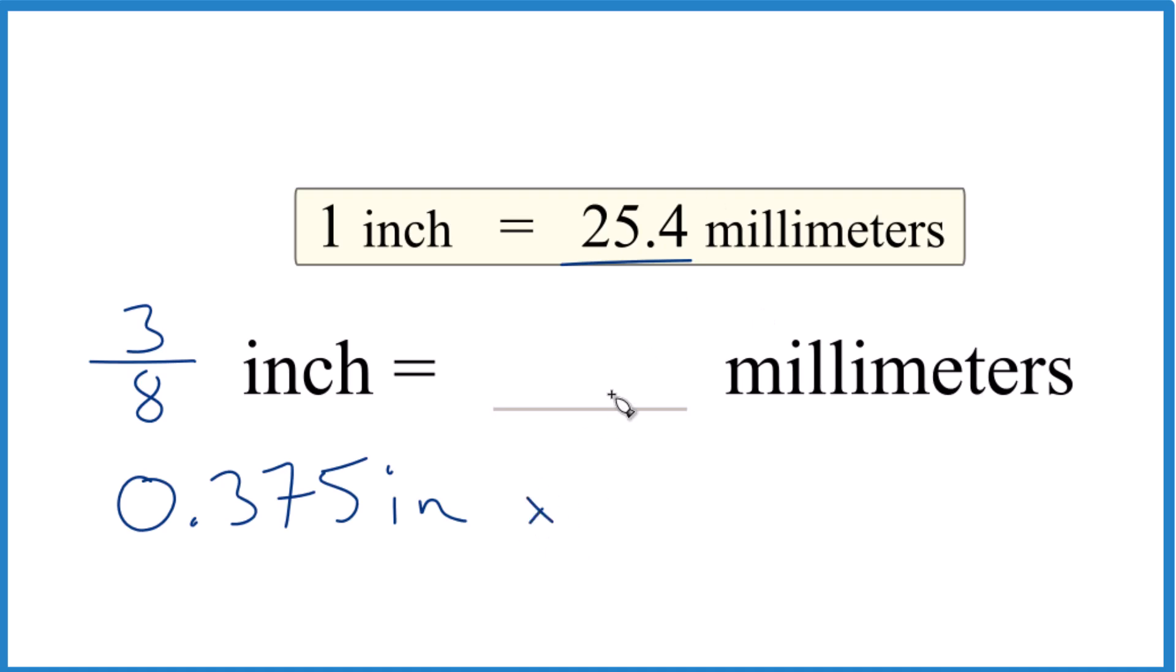so we're just going to multiply that times 25.4, and that's the number of millimeters in one inch. So we can call it millimeters over inch.